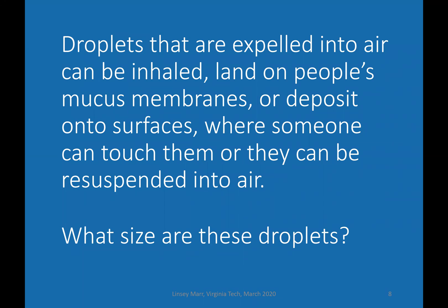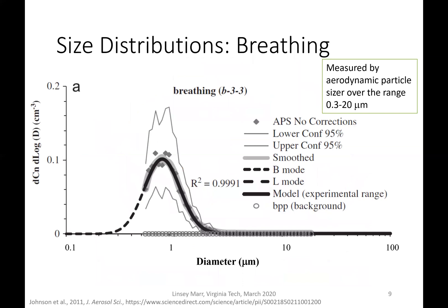Droplets expelled into air can be inhaled, can land on people's mucous membranes, deposit onto surfaces where someone can touch them, or be resuspended into air. A critical question is what size are these droplets? Several studies have tried to measure the total aerosols and droplets that come out when you're breathing, talking, coughing, or sneezing. Some older ones used methods that were not able to detect many of the submicron particles. A newer study did a careful job looking at the full range of particles, measuring things smaller than 20 microns all the way down to 0.3 microns using an aerodynamic particle sizer, and then measuring things larger than 20 microns by looking at deposited droplets and measuring their size.